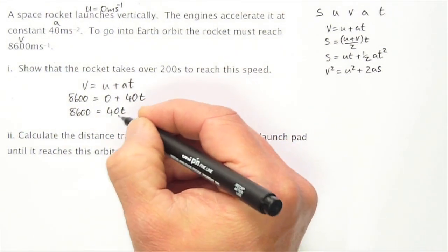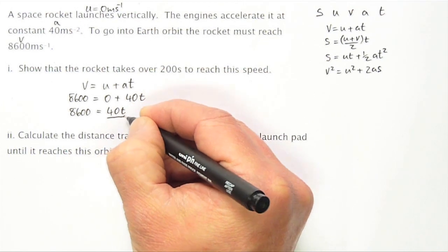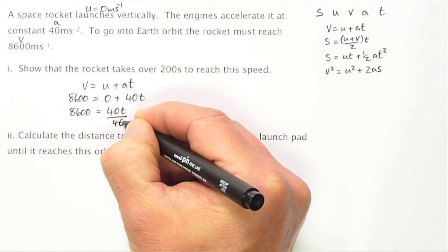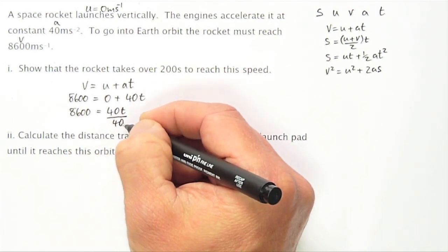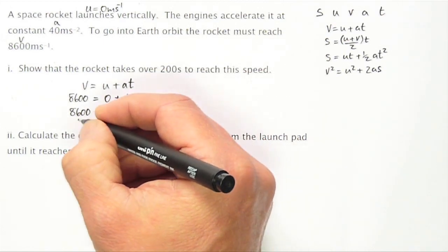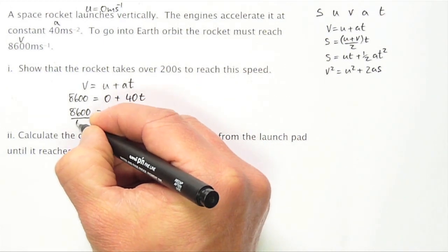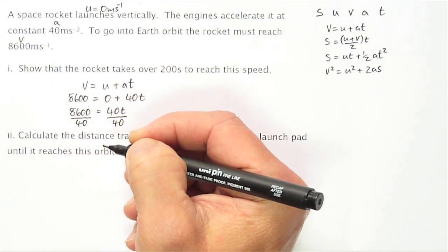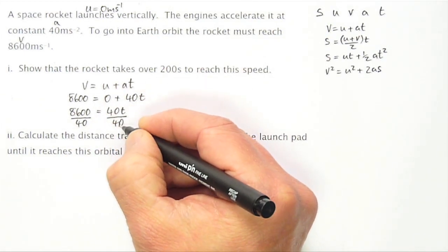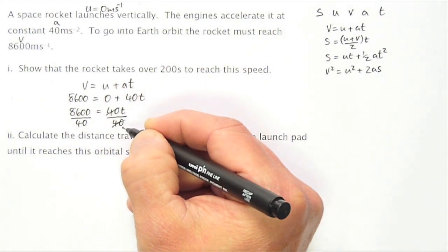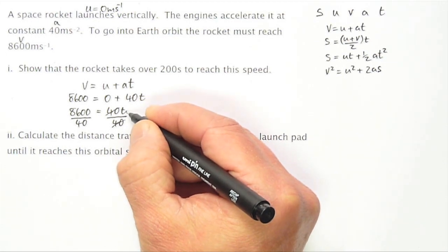To get T on its own, I want to divide this side by 40. And what I do to one side of equation, I must also do to the other side. So I'll also divide this side by 40. 40 divided by 40. So I've just got T on this side of the equation.